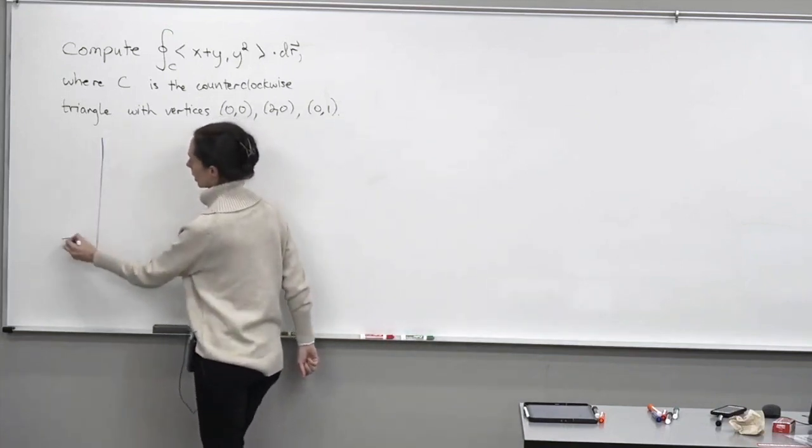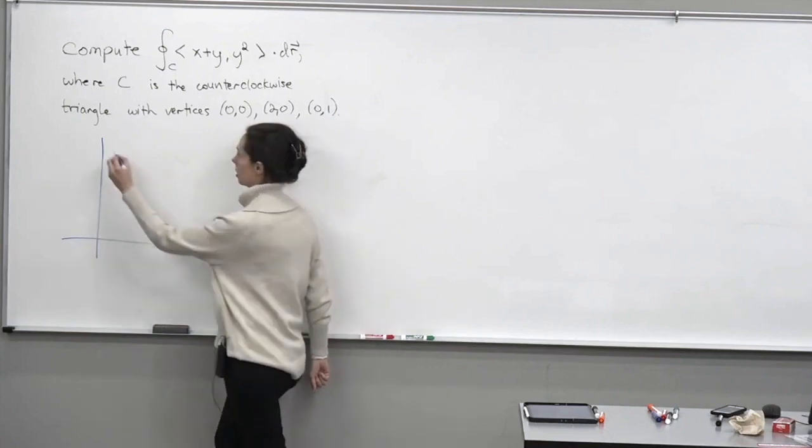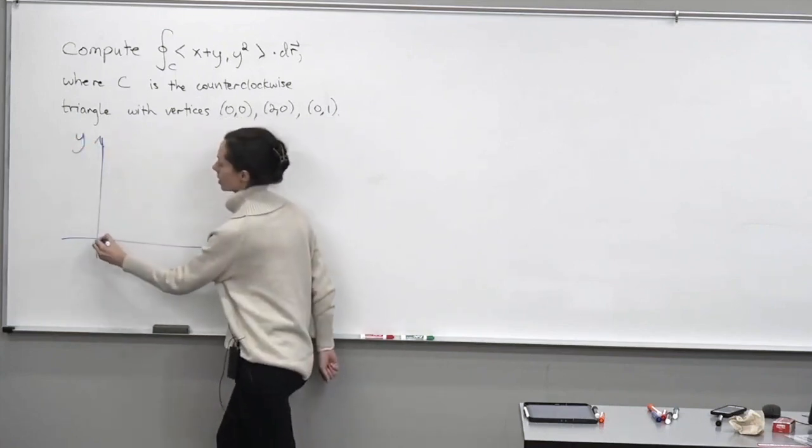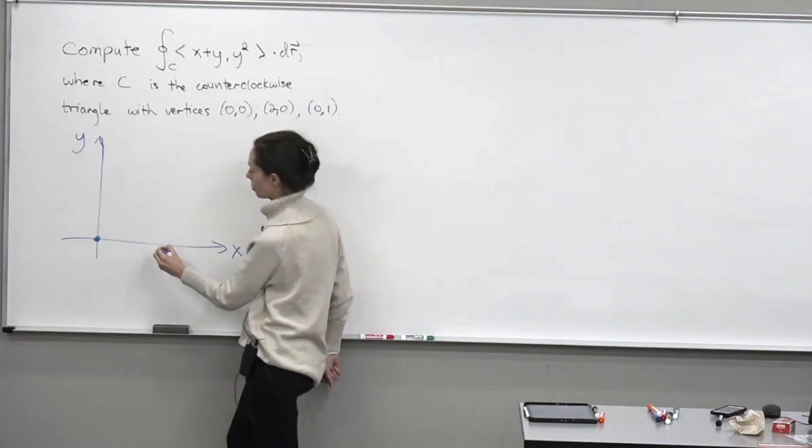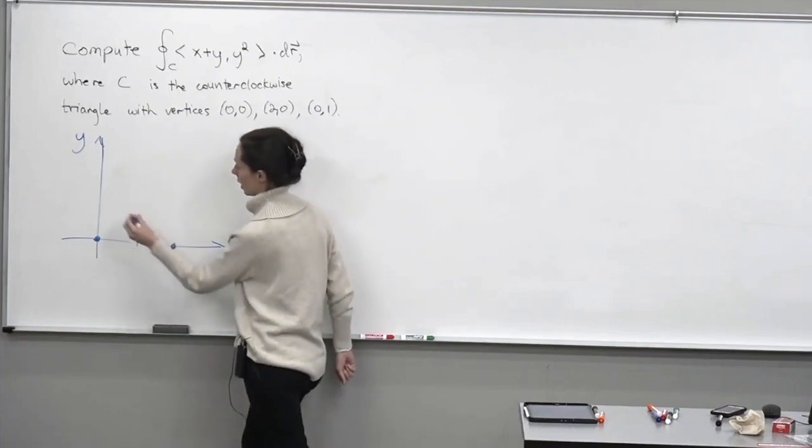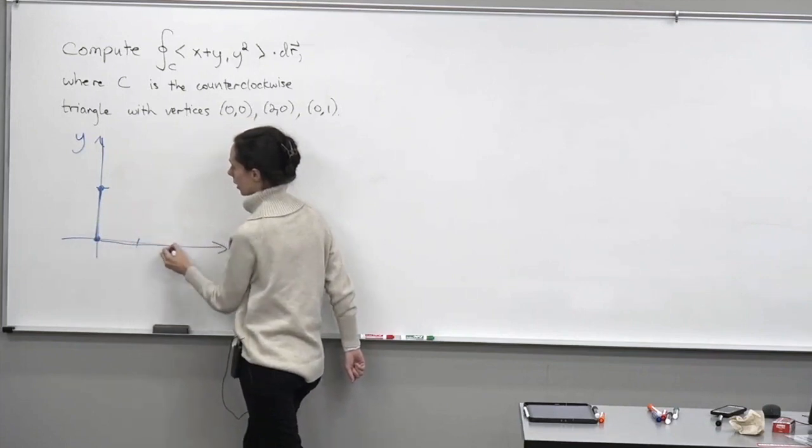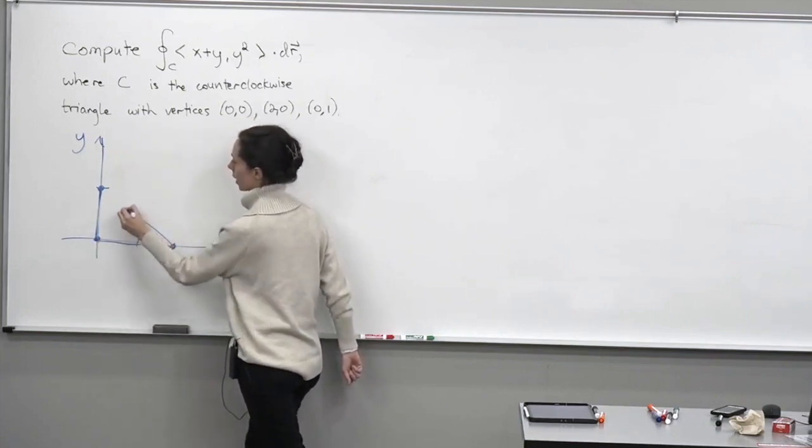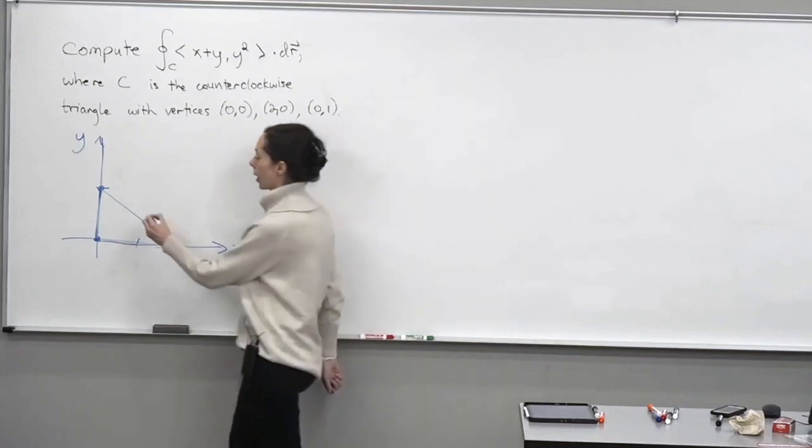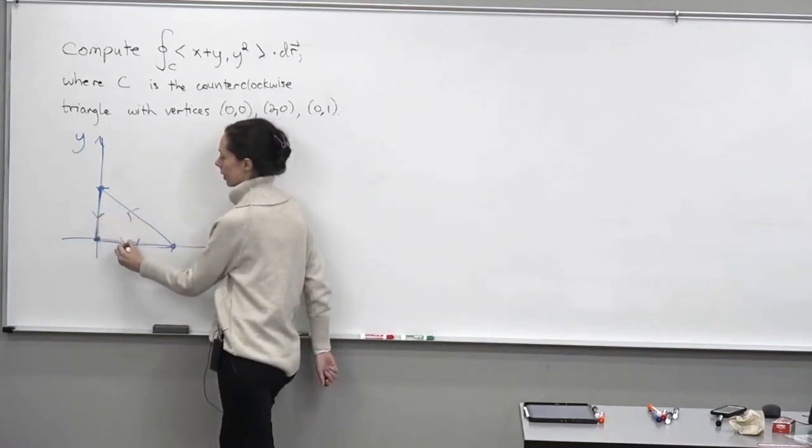I'm going to draw the y-axis and the x-axis. We have vertices at (0,0), (2,0), and (0,1). Okay, so our curve C is the boundary of this triangle, and we're told that we're going around it counterclockwise, so you can orient C like this.